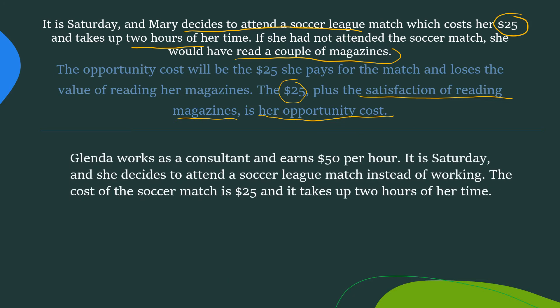Now let's look at another example. Glenda works as a consultant and earns $50 per hour. It is Saturday and she decides to attend a soccer league match instead of working. The cost of the soccer match is $25 and it takes up two hours of her time. She's already decided that she's going to attend the soccer league match instead of working.